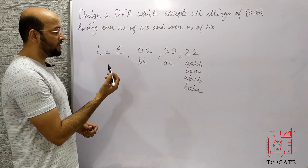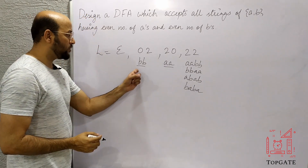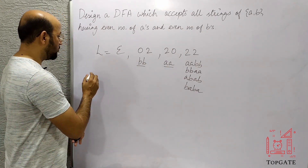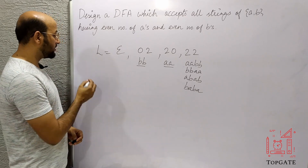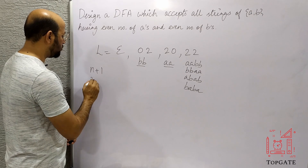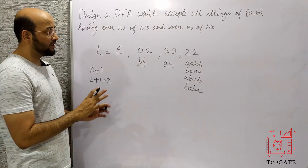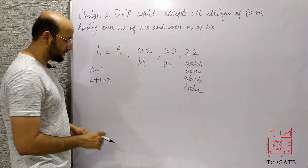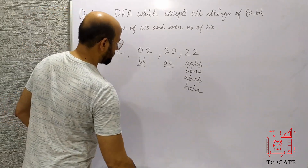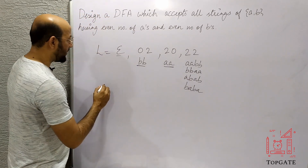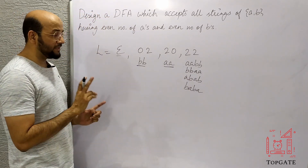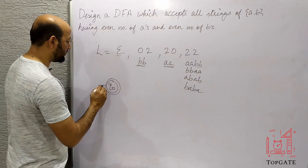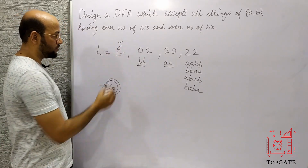The shortest non-empty strings are BB and AA, both of length 2. We know that if the length of the shortest string is 2, then the number of states in the DFA will be n plus 1, that is 2 plus 1 equals 3. So we need at least three states — there can be more. Since we have to accept epsilon, we will make the initial state Q0 also a final state.